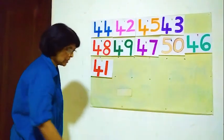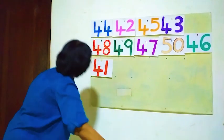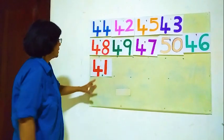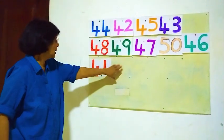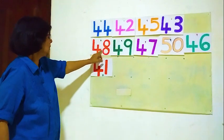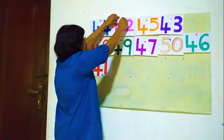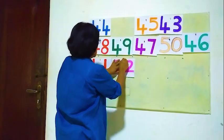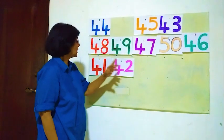Now the next one — after 41, what is the next number? 42. 42 must come here after 41. Here 42, 42 must come after 41. So: 41, 42.